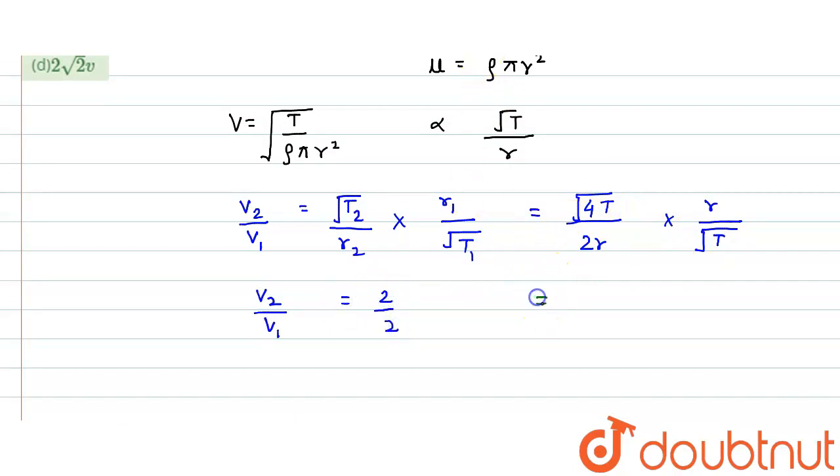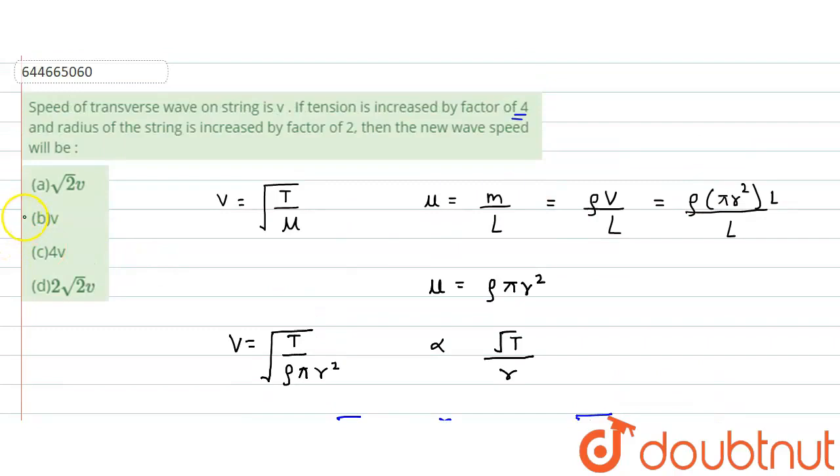What would be the relationship between v₂ and v₁? We say that v₂ would be same as v₁. And v₁ was given as v, so the correct answer for v₂ would be that it would be same as v. The correct option is option B, which equals v. Hope you understood this solution, thank you.